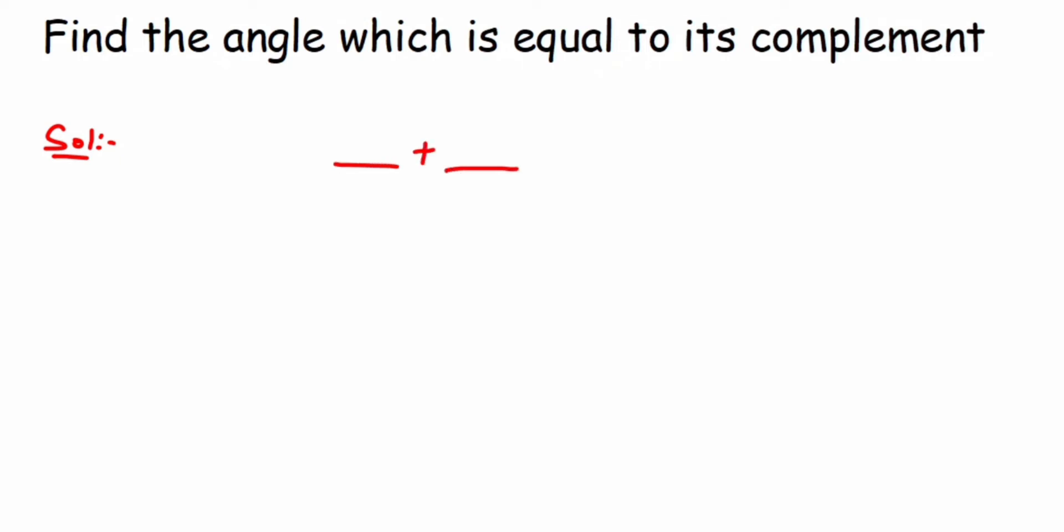Suppose the angle is x. The question says the angle is equal to its complement, so the complement of x is also x because they are equal. The angle and its complement are both the same. When we add these two angles, it should equal 90 degrees. Let's find out what this angle is.